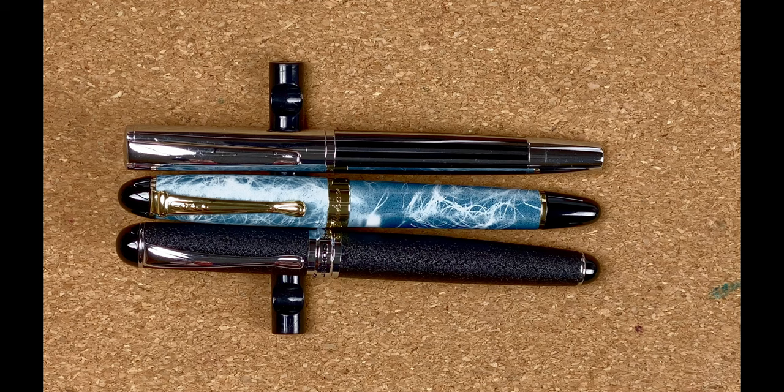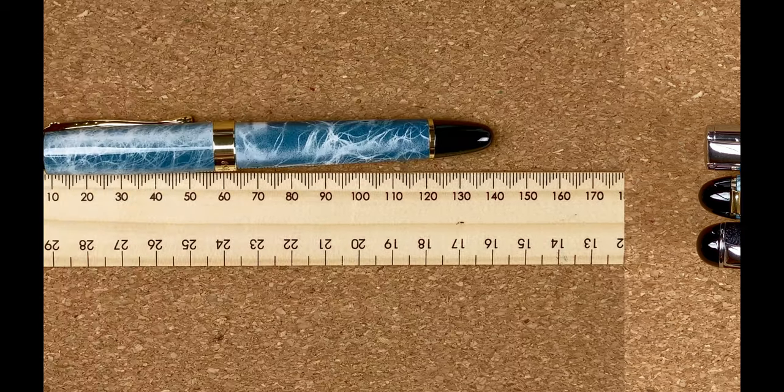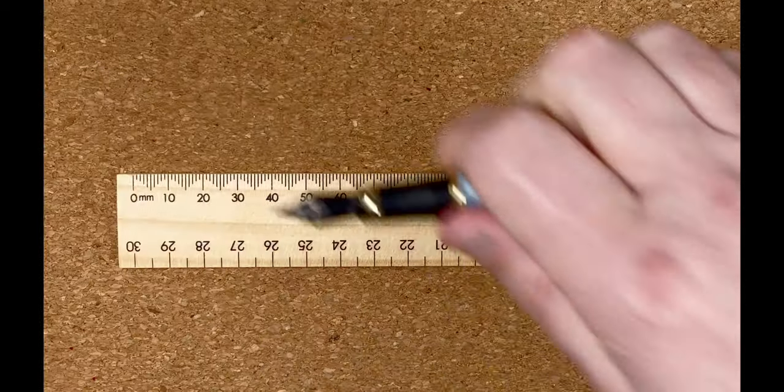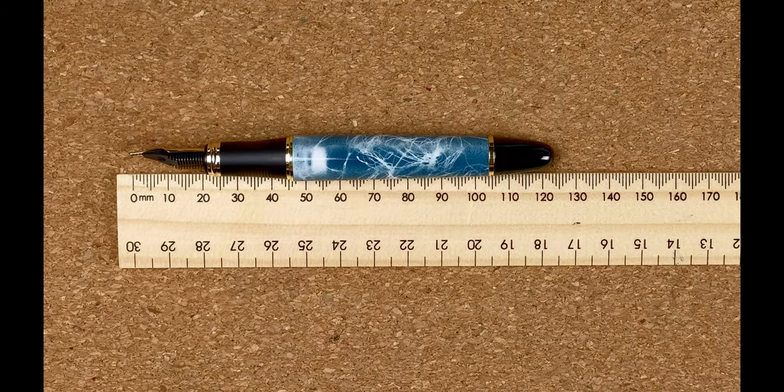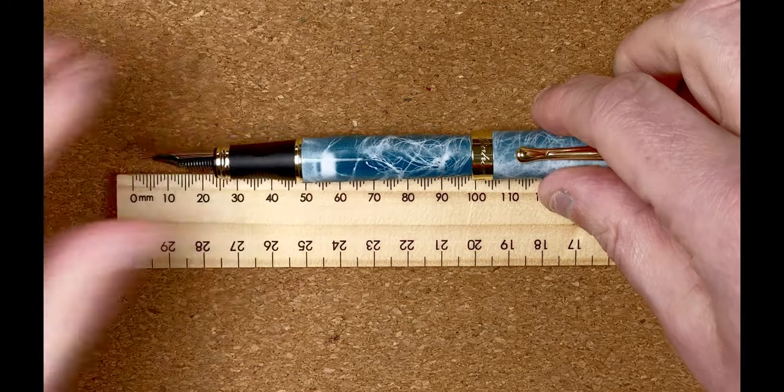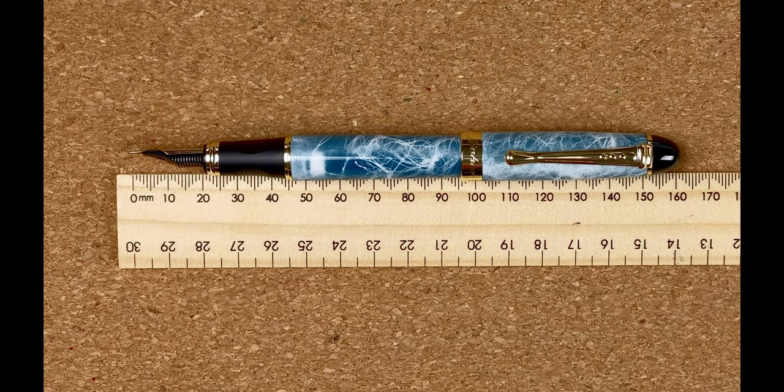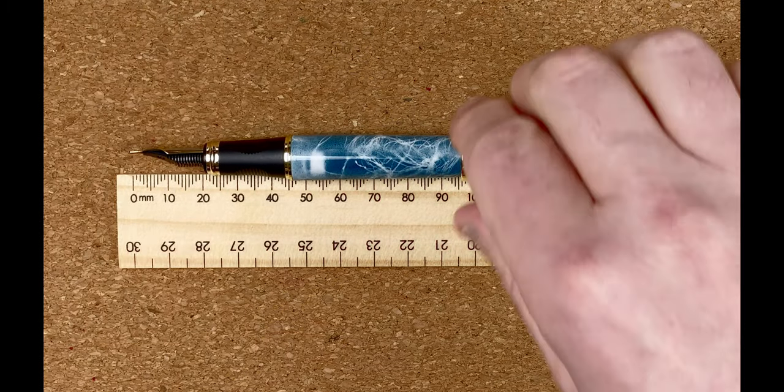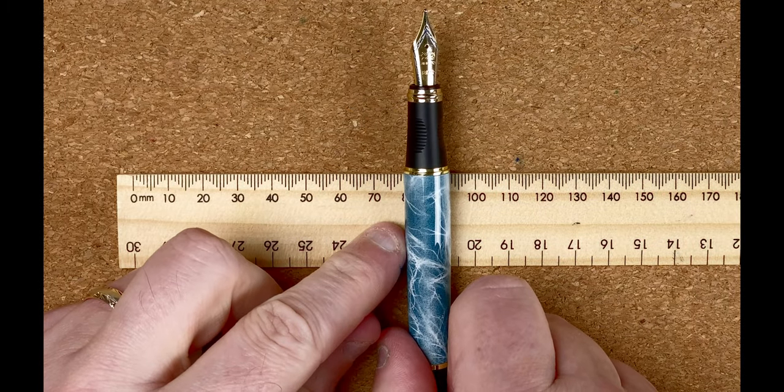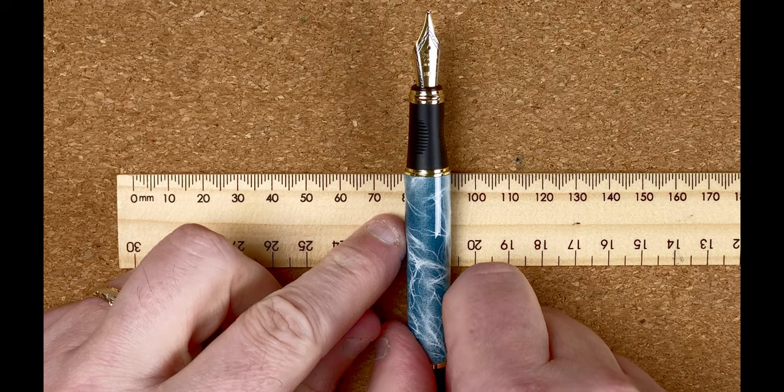I'm going to fetch in my ruler and we'll do some measurements. Here we've got the ruler. The length capped: 14 centimeters. Uncapped: 12.3 centimeters. I'm going to give you a posted one, but I wouldn't really advise posting this—16 centimeters.